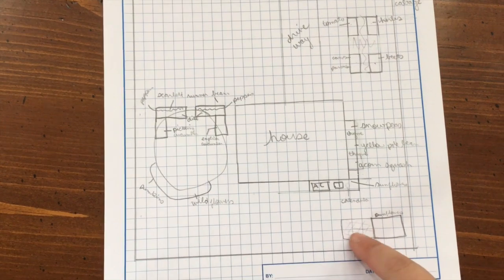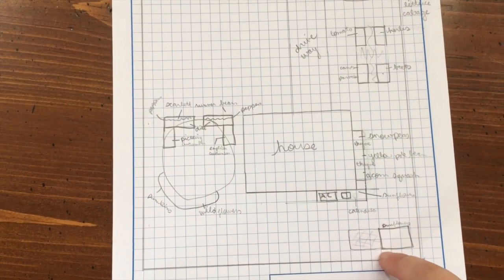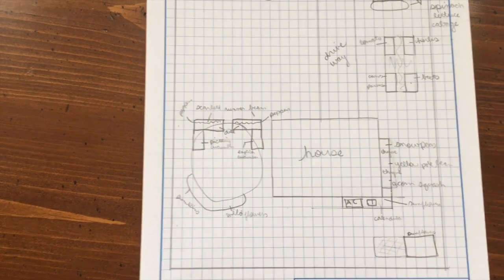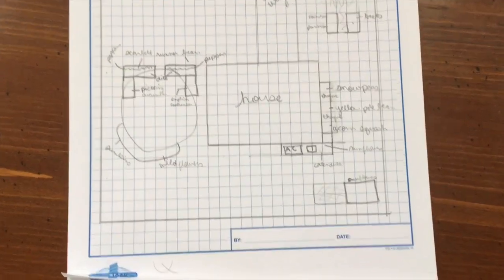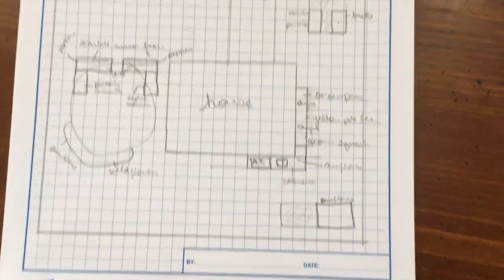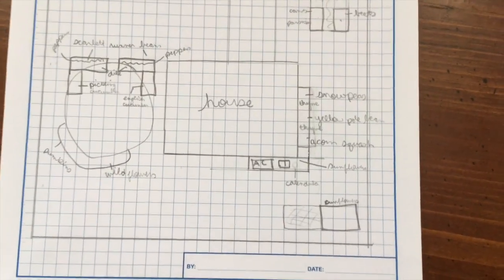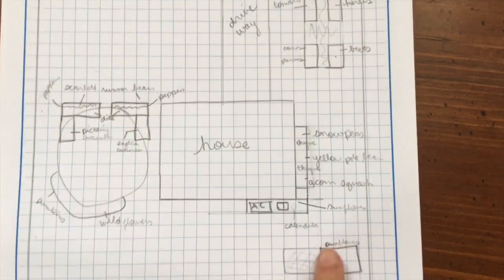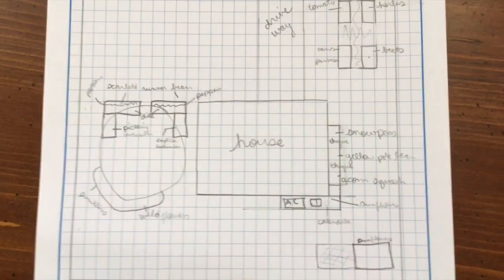This is our chicken coop and chicken run. I do have some hostas along the fence line just to create some shade for the chickens. I don't want to plant anything edible there for humans to eat because the chickens will just eat it up. They'll destroy it. I am going to plant some sunflowers though.